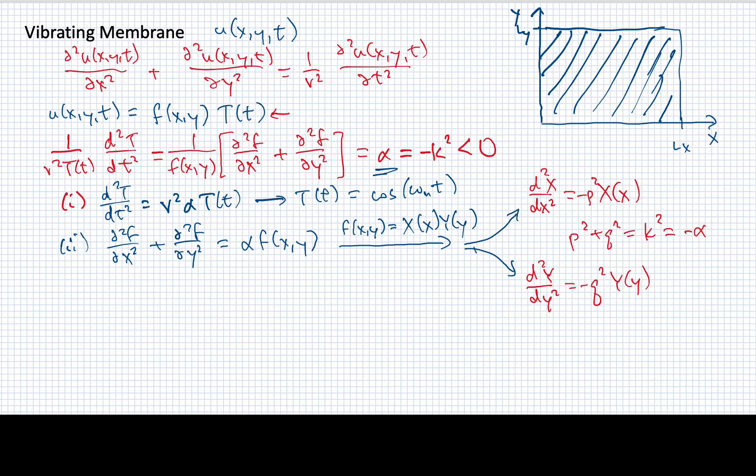In effect, what has happened is when we had a single dimension, when we had a vibrating string, we only had one of these as an ordinary differential equation. With a vibrating membrane, we end up with two of them. You can imagine if we had somehow an object that was three-dimensional and was vibrating or oscillating, that we would then have a third ordinary differential equation that we could get out of that, although that's a little bit more complicated case.